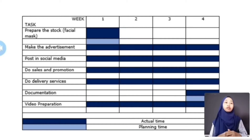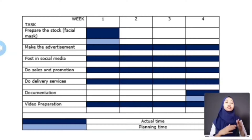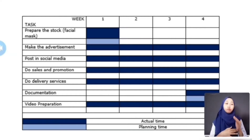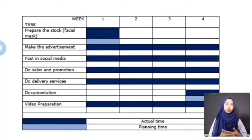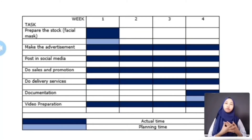Week 2, we can sell 5 sets. Week 3, we sell 4 sets. Then sales increase to 8 sets for week 4. According to this Gantt chart, we see that every week we do the same business activity. But in week 1, we prepare our stock as inventory for 4 weeks. And in week 4, we do the preparation for our report. That's all from me. Thank you.